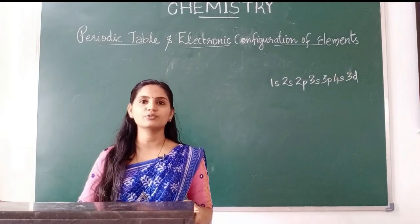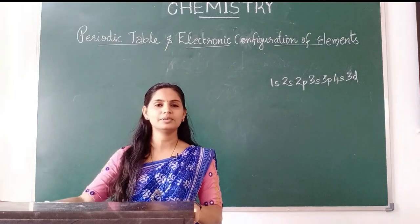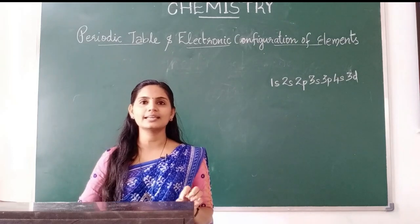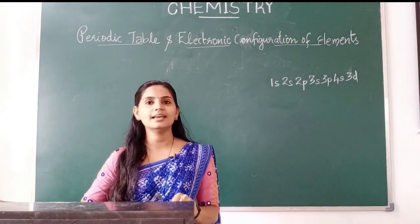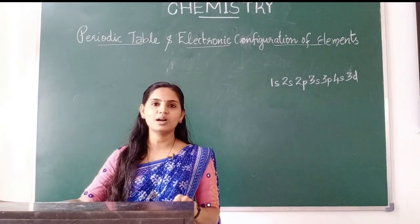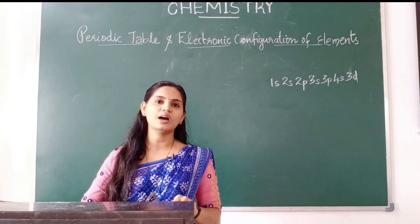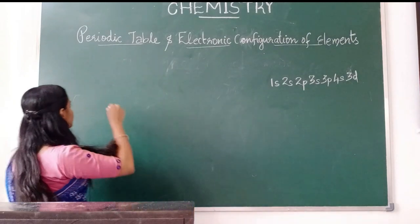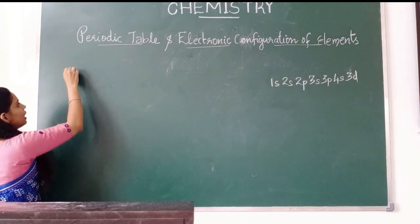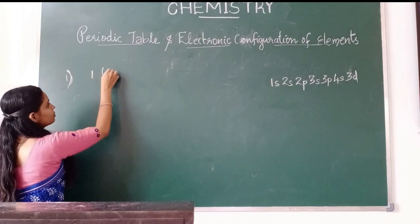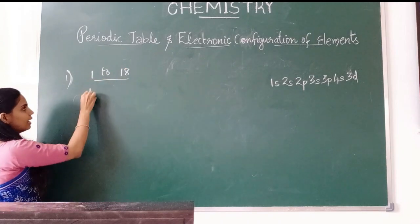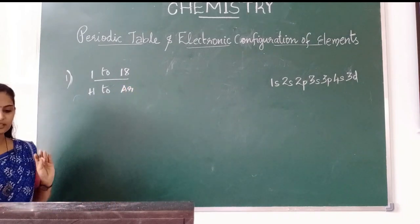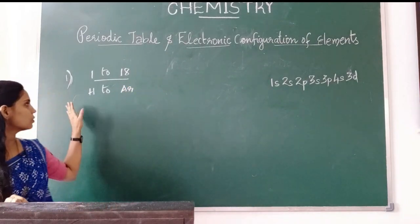In this class, we will discuss the subshell electronic configuration in 4 categories. The first category is the elements of atomic number 1 to 18, that is hydrogen to argon.